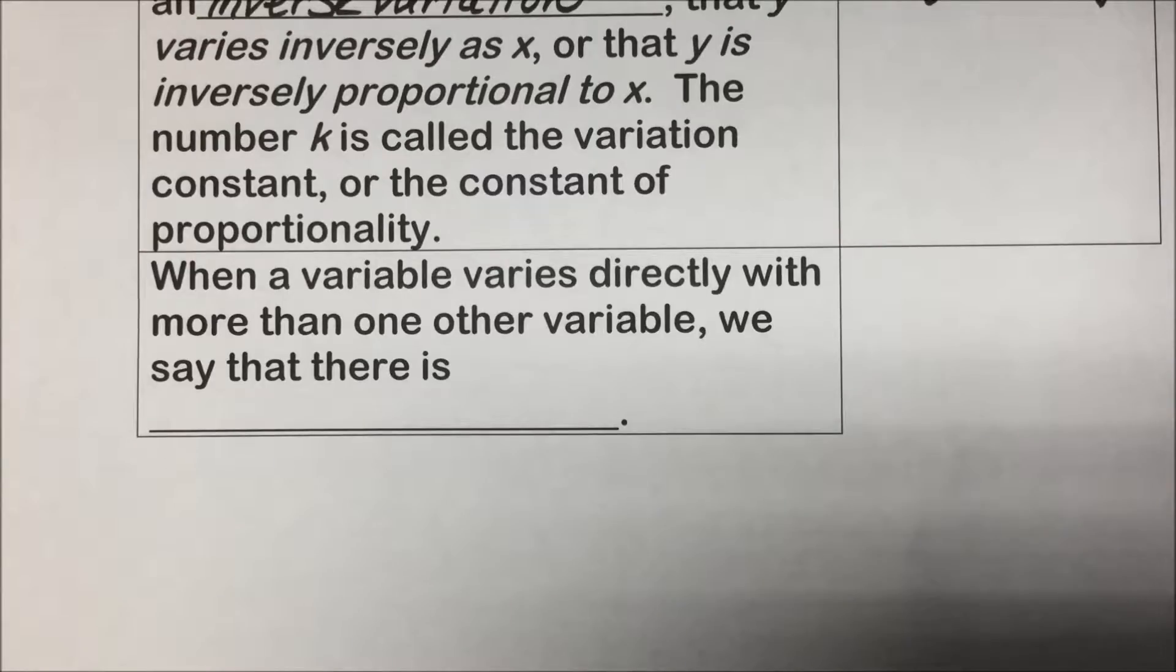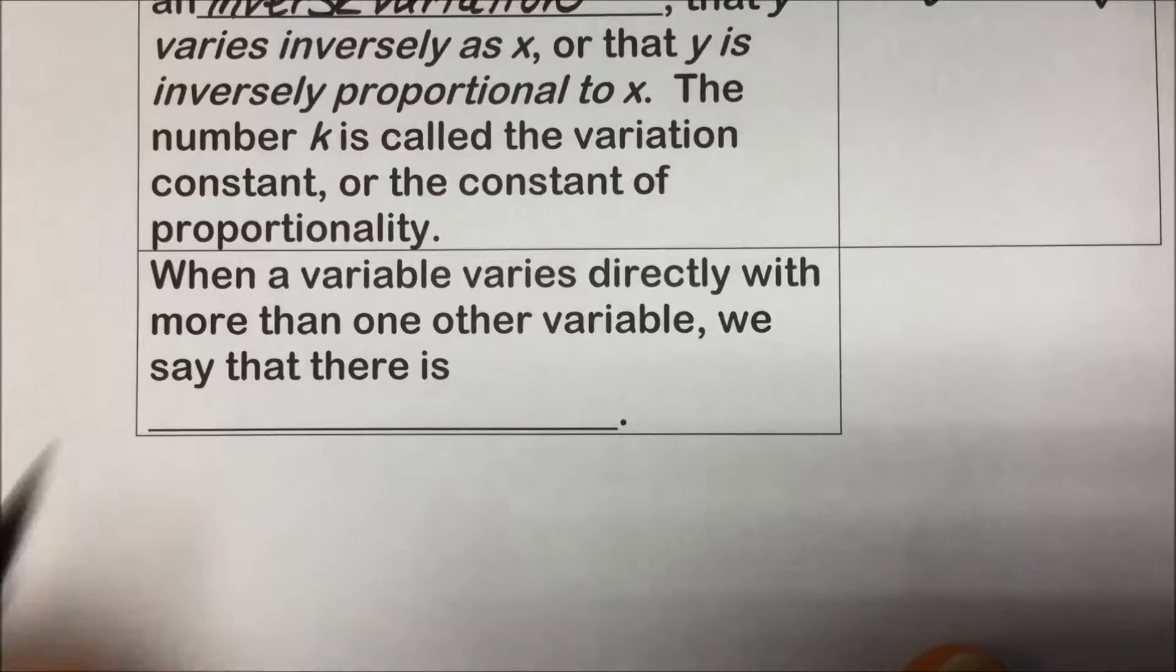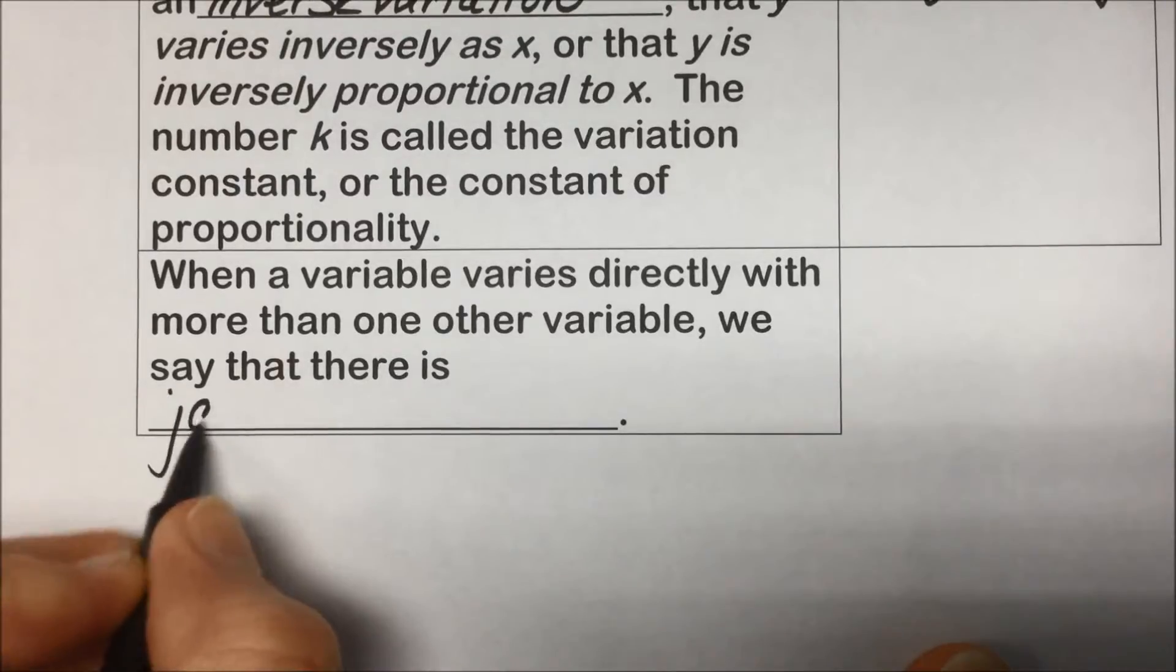Section 6.8 Joint Variation and Combined Variation. When a variable varies directly with more than one variable, we say that there is a joint variation.